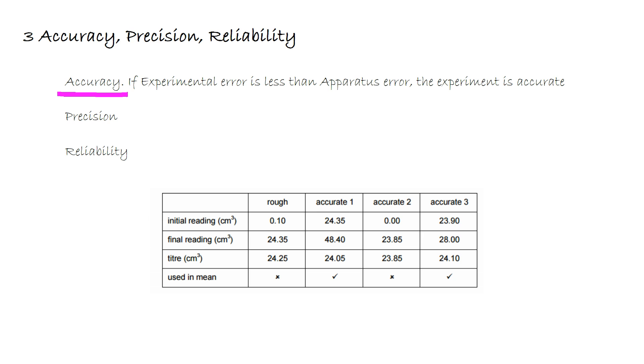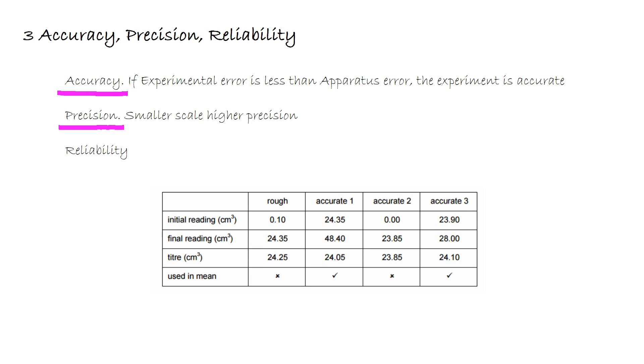The next thing to consider is the precision of your results. Precision is a measure of the number of decimal places your results are given to, and the smaller the scale, the higher the precision. Let's look at these titration results as an example. Normally we would try and give our titer readings to within ±0.05 cm³.